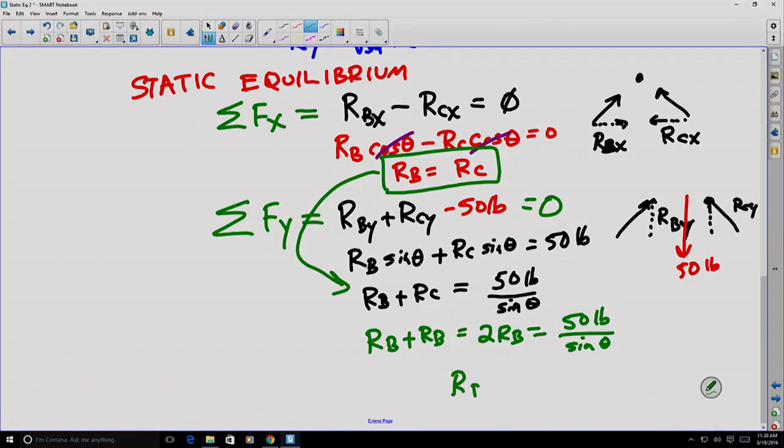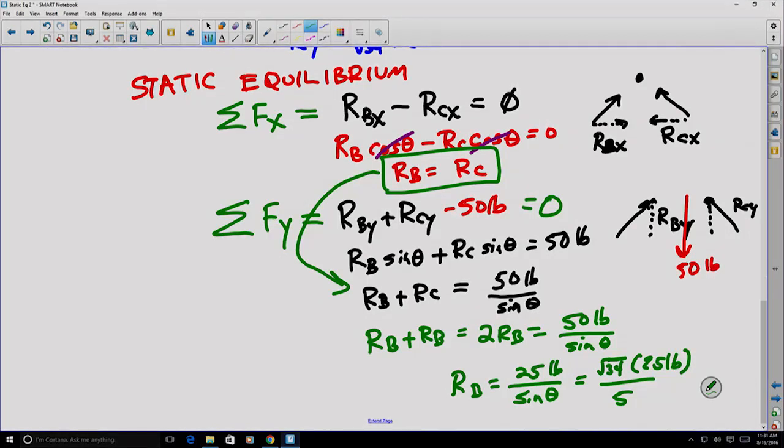We're very close. RB equals 25 pounds divided by sin θ. If we remember, sin θ was 5/√34, so we invert it because it's in the denominator - (√34/5) × 25 pounds. That ends up being 29.15 pounds. And because RB equals RC, we know that RC is also 29.15 pounds.